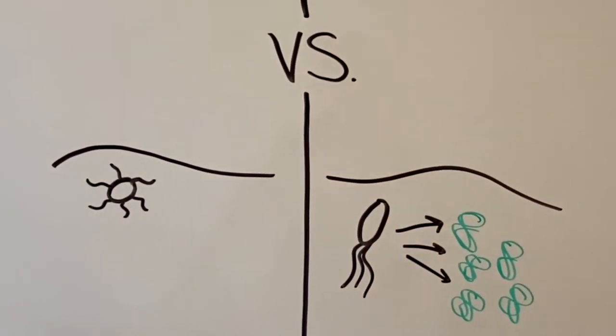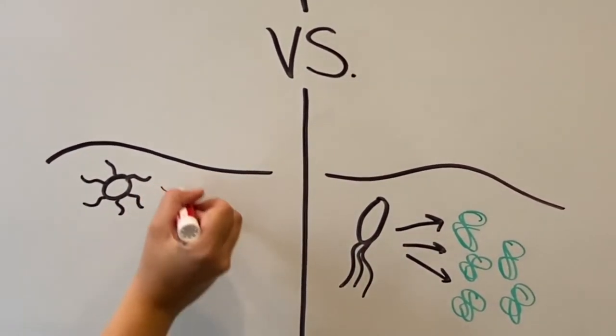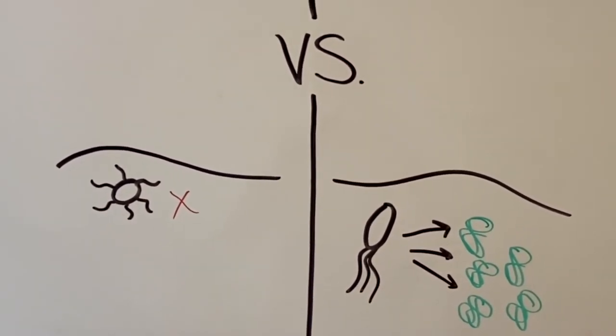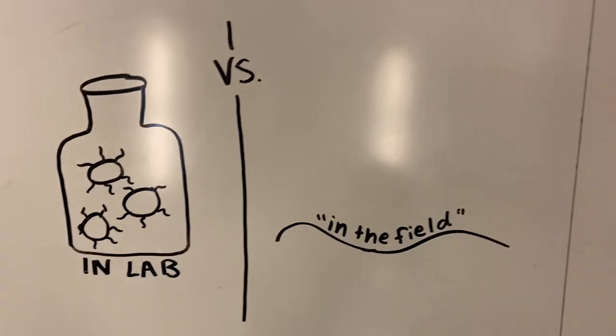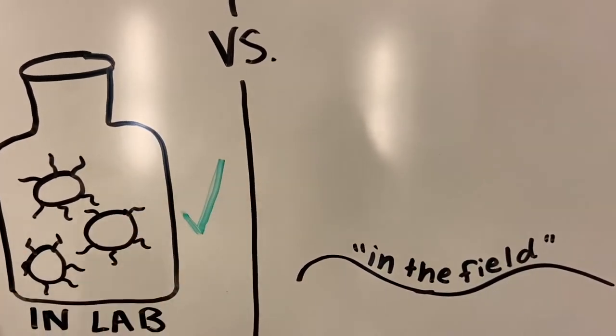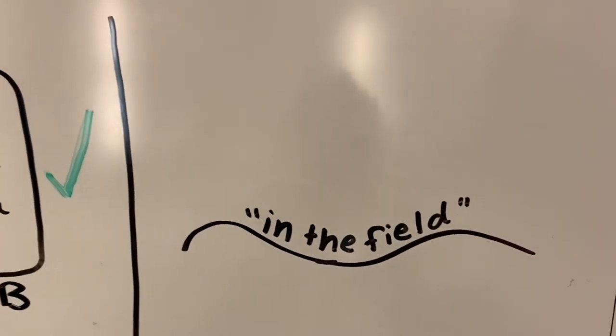Despite the immense benefit of creating fieldable synthetic biology systems, the current state of chassis selection is not well explored. Currently, E. coli is the most commonly used bacterial chassis, since it is culturable, well characterized, and easy to work with in the lab.